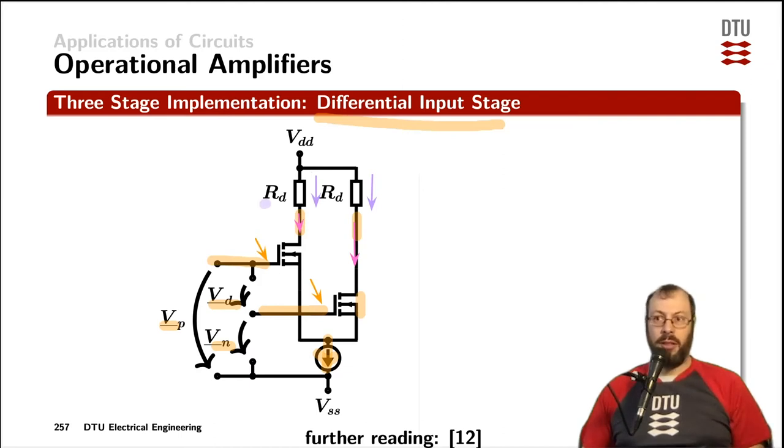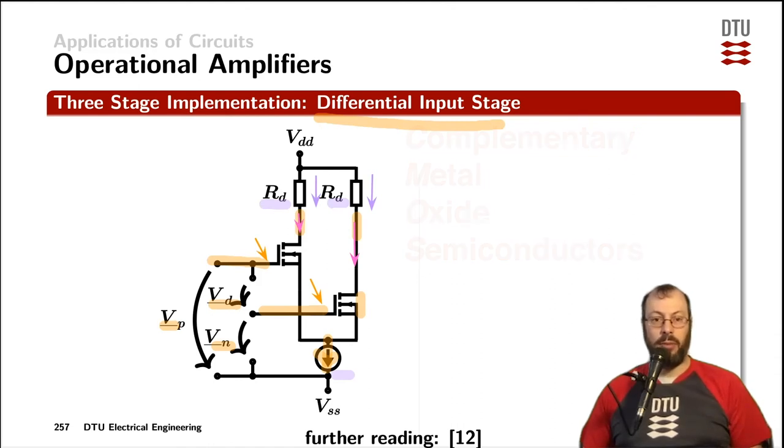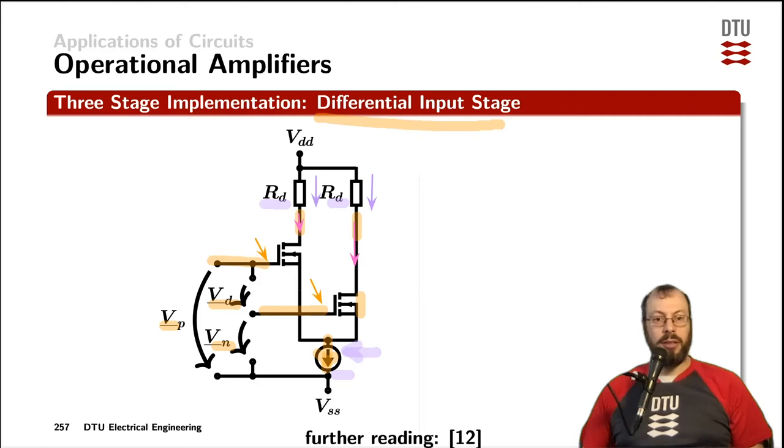Now in most processes, these drain resistors here are also implemented as a specific connection of other transistors, and the same holds for the current source down here. There are various kind of processes. For example CMOS stands for Complementary Metal Oxide Semiconductors, where Complementary means you have P and N channel transistors available. Then you have Bi-CMOS, which is the same with the CMOS but additionally you also have bipolar transistors. These bipolar transistors very often come handy for implementing current sources and precision voltage references for those. And then there are Bi-C-DMOS processes which on top also contain diodes. Each of those processes has their own set of components that are available to design circuits with.